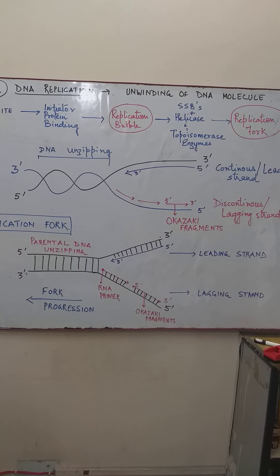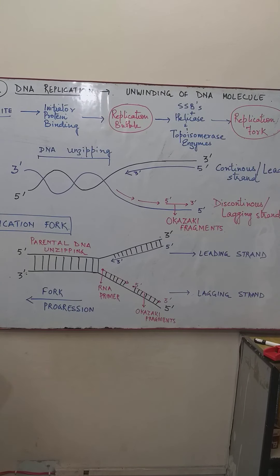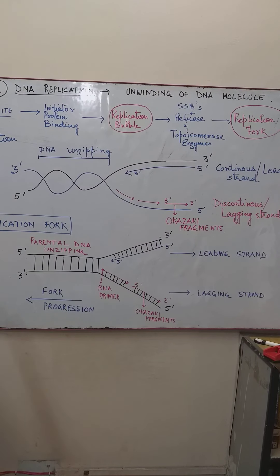This is the second step — the unwinding of the DNA molecule during DNA replication. The ORI site mentioned here was part of the first step, which is the recognition of the initiation point. That step helps in identifying the site where the actual process of DNA replication will start. The ORI site is that specific site. This is Step 1.